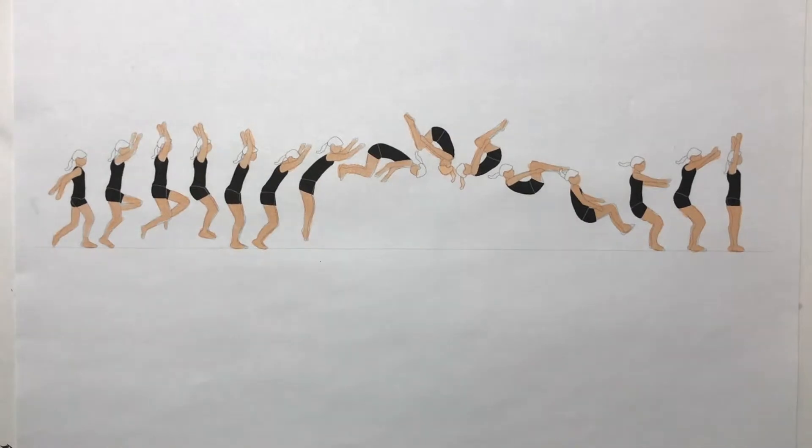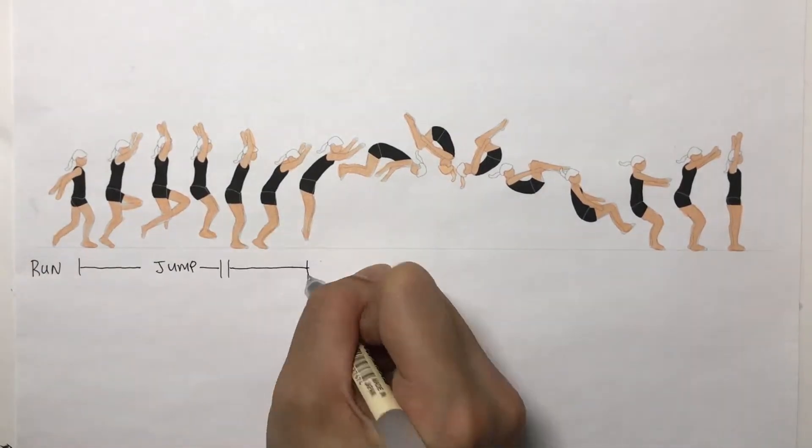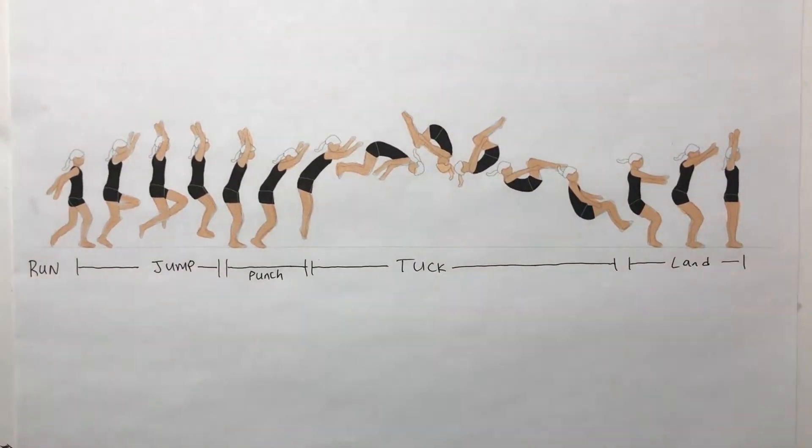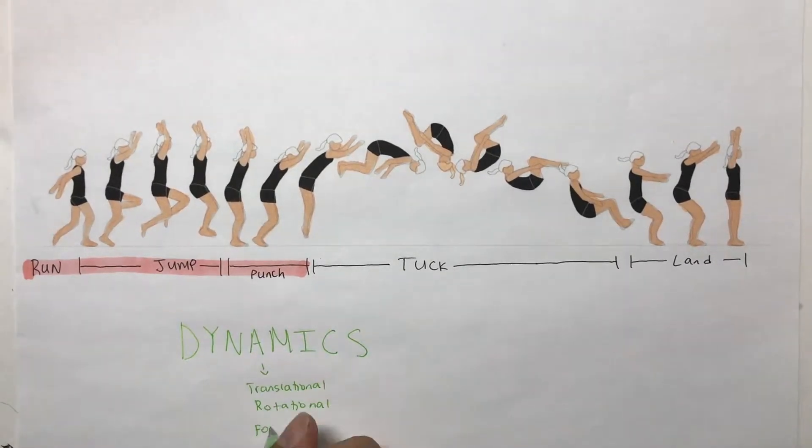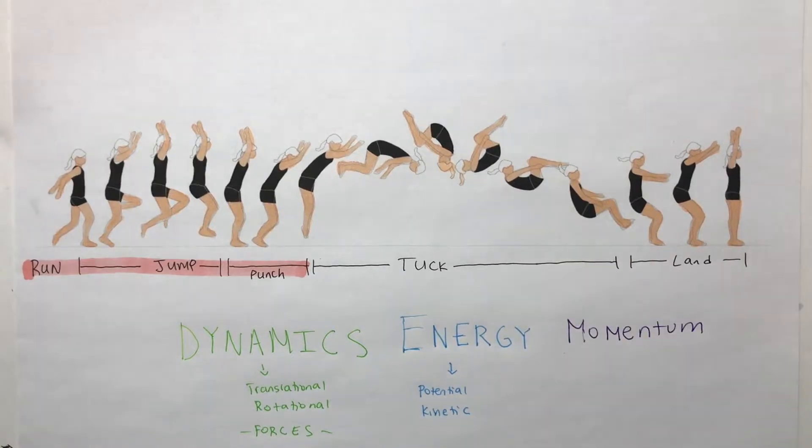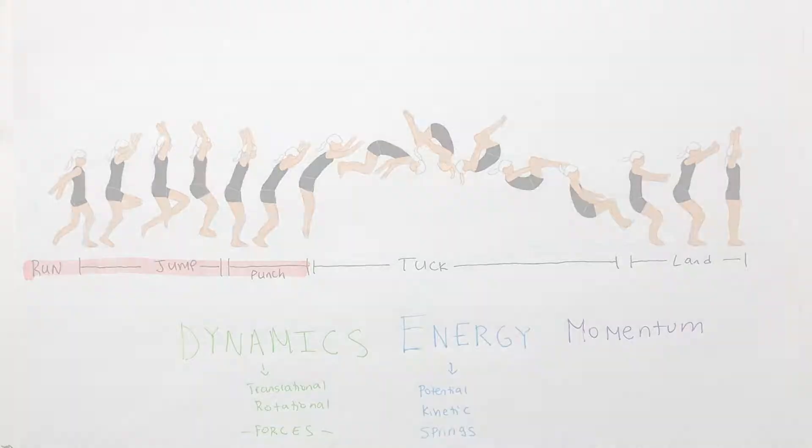What we're going to be looking at is the front tuck. As you can see, the gymnast runs, jumps, and then flips. How the gymnast can make it look effortless is through her jump. We can analyze it using dynamics, energy, and momentum, three key parts of physics.